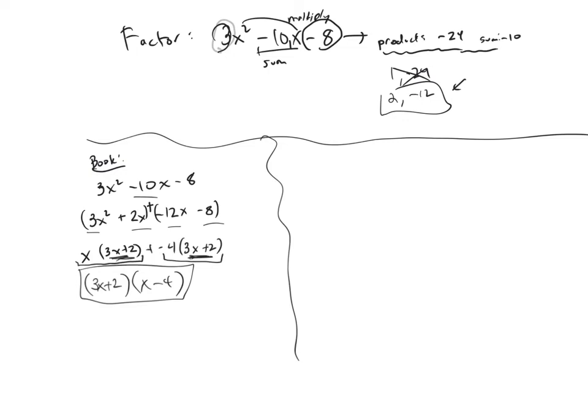The box method basically starts the same way. You multiply the a times the c. You're looking for a product that gives you that. You're looking for two numbers that multiply to give you this and sum to give you this. You go through this process, get these two numbers, and then that's where it's different.